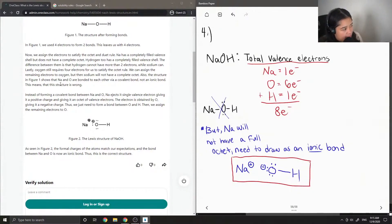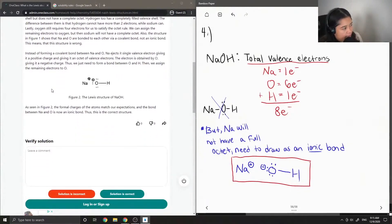This means that this structure is wrong. Instead of forming a covalent bond between sodium and oxygen, sodium ejects its single valence electron, giving it a positive charge and giving it an octet of valence electrons. The electron is obtained by oxygen, giving it a negative charge. Thus, we just need to form a bond between oxygen and hydrogen, then we assign the remaining electrons to oxygen.